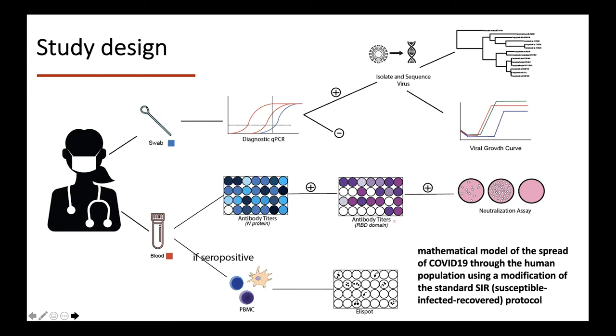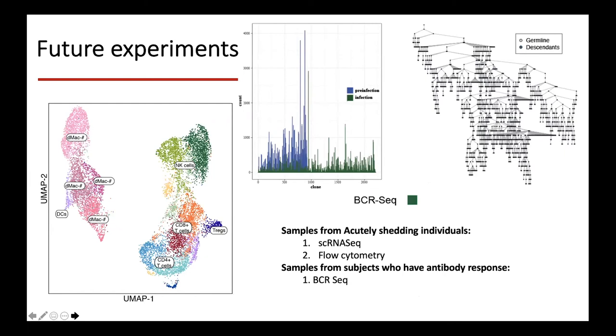In terms of future experiments, if we do have individuals who are acutely shedding, this gives us actually a very unique opportunity to look at the host response in people who are not symptomatic. Most of the studies published so far are mostly focused on individuals who are in the ICU or in the hospital, very sick patients. We have very few studies that have looked at individuals who don't even know that they're sick. So we can do those studies.